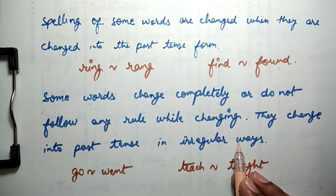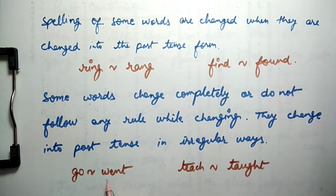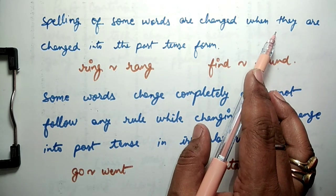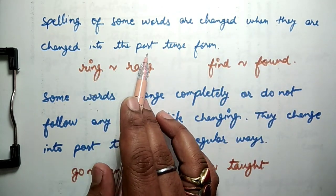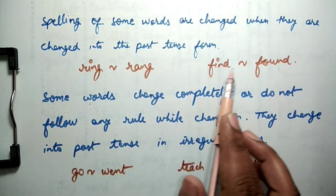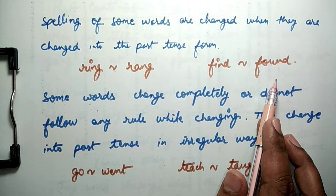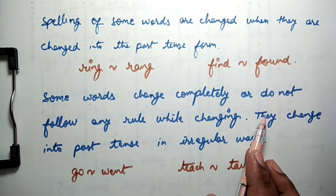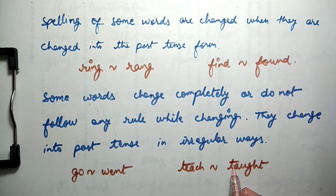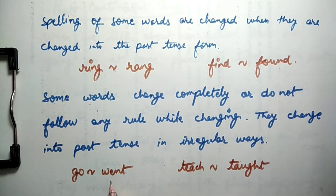Kuch words ki spelling badal jati hai jab unhe past tense me badla jata hai. Go ka past tense ho jata hai went aur teach ka past tense ho jata hai taught.